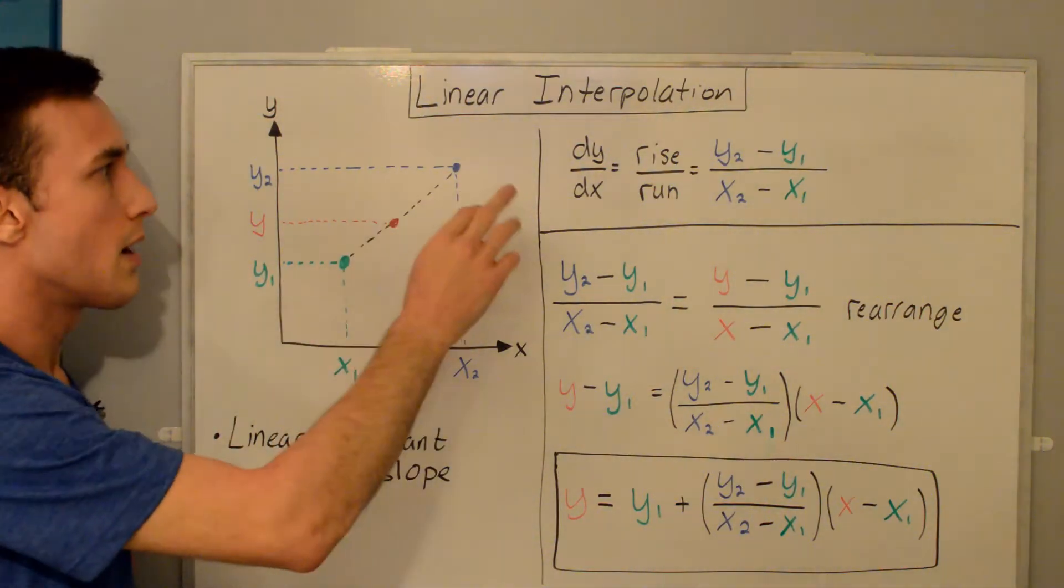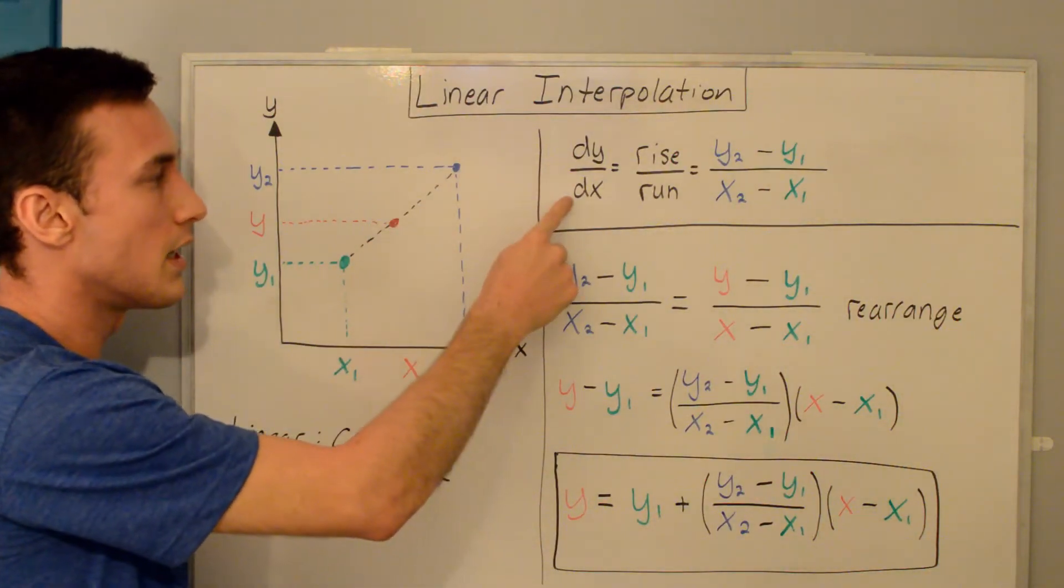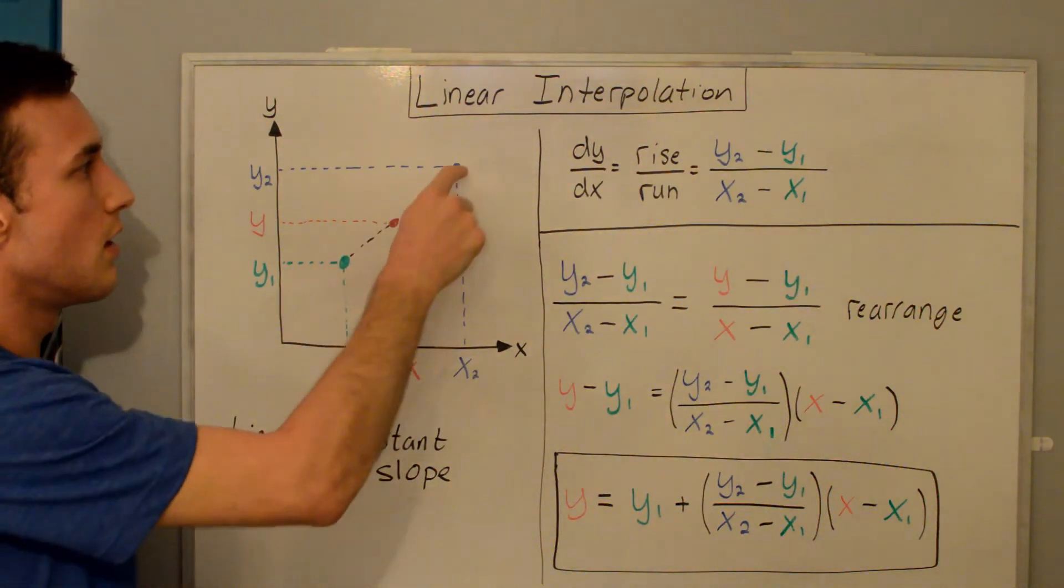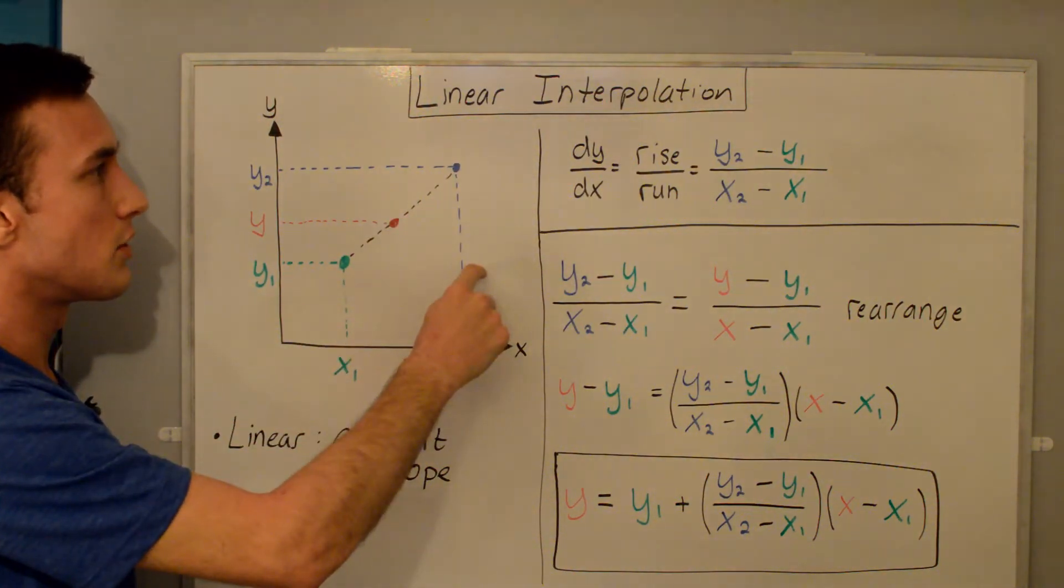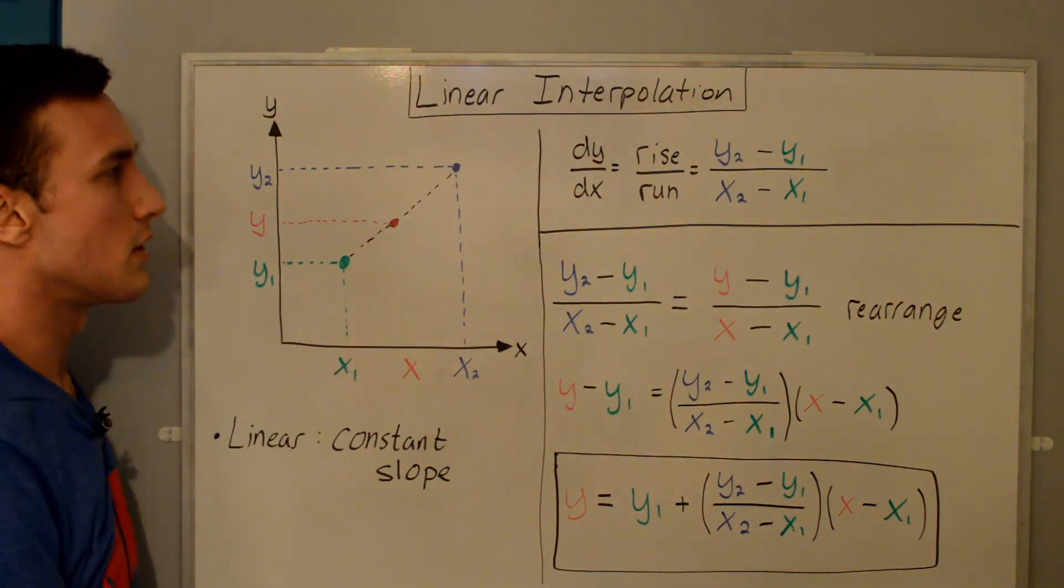For a straight line, we know that the slope of the straight line is the change in y over the change in x, or you can call that the rise over the run. In this case, for the blue and green points, it is y2 minus y1, that's a change in the y direction, over x2 minus x1, the change in the x direction.